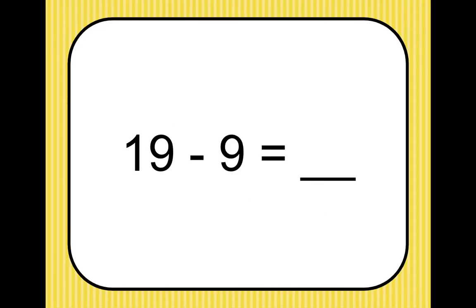19 minus 9 equals what? You can press pause here. 19 minus 9 equals 10.